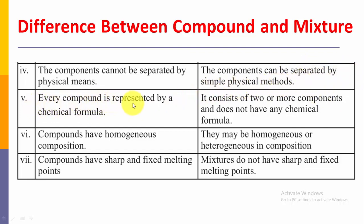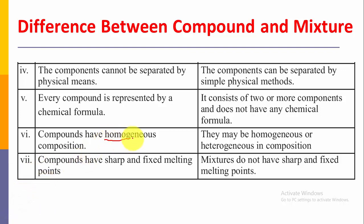The fifth difference: every compound is represented by a chemical formula, like water is H2O and carbon dioxide is CO2. But a mixture consists of two or more components and does not have any chemical formula — it just has a common name, like ice cream. The sixth difference: compounds have homogeneous composition, meaning a single phase. But mixtures may have either homogeneous or heterogeneous composition, which we discussed in detail in the previous lecture.